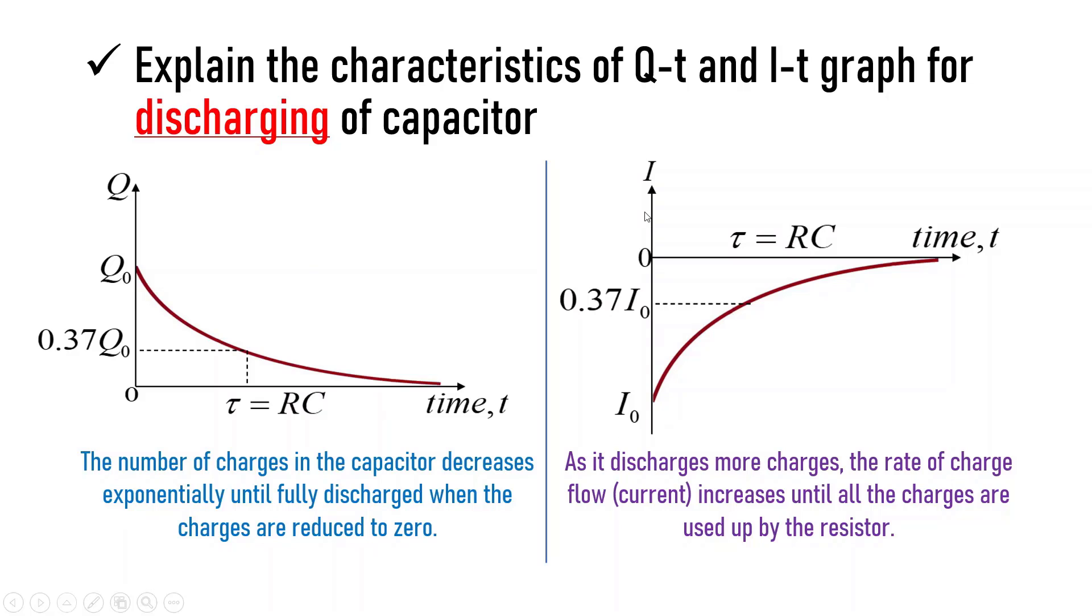Meanwhile, for the I against t graph, as it discharges more charges, the rate of charge flow, which is the current, increases until all the charges are used up by the resistor.